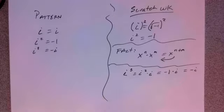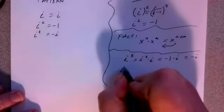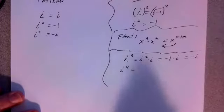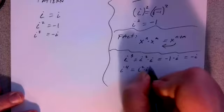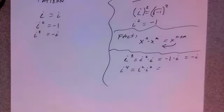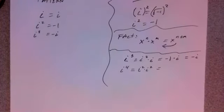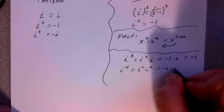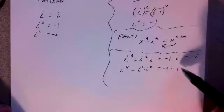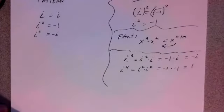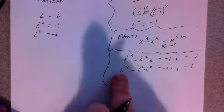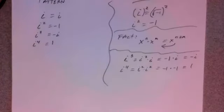Now let's take a look at i to the 4th. Again, I'm going to use that fact and say i to the 4th is i squared times i squared. And i squared is negative 1, so here I have negative 1 times negative 1. Negative times negative is positive, 1 times 1 is 1. So i to the 4th is just 1.